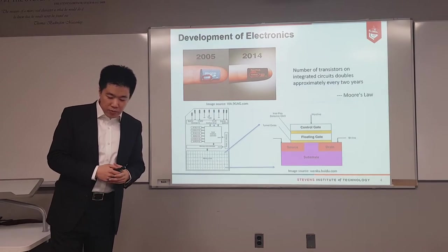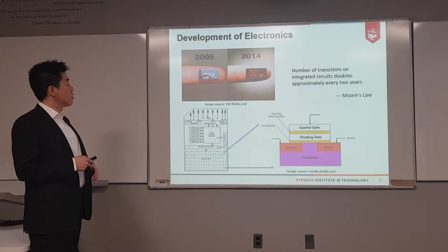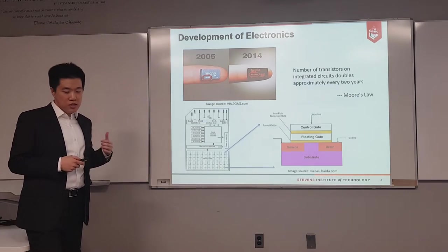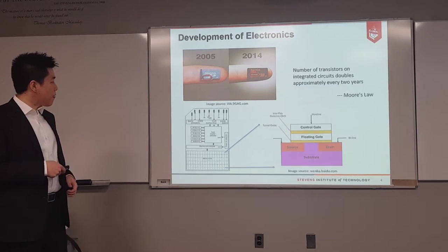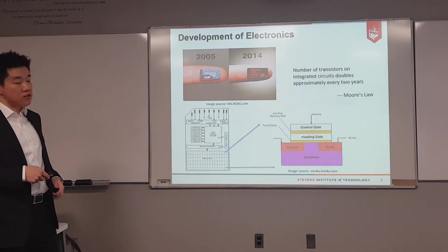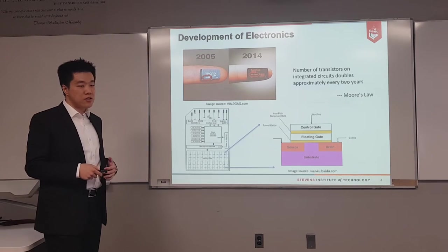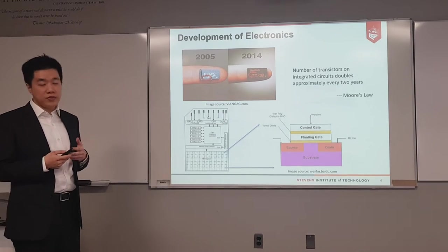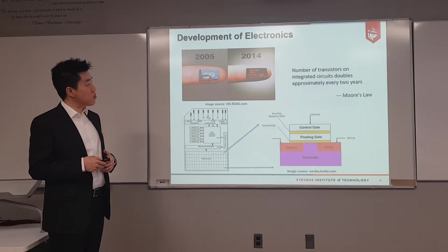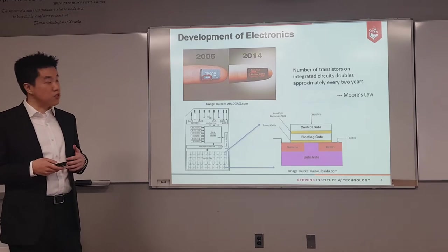The development of electronics has been really fast. From 2005 to 2014, the capacity of the microSD card increased 1000 times. Inside these micro devices, a memory core contains billions of transistors, and one transistor stores one byte of data. In 1965, Moore came up with Moore's Law, predicting that the number of transistors on integrated circuits doubles approximately every two years.